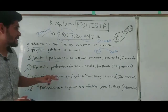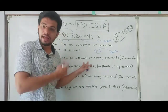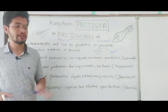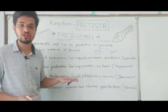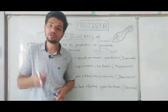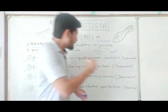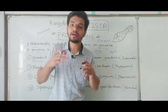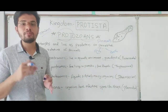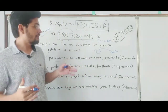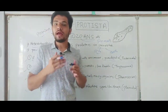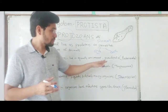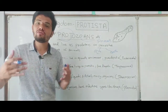Amoeboid protozoans are aquatic — they can live in marine or freshwater environments — or in moist soil. They possess pseudopodia. 'Pseudo' means false and 'podia' means feet, so they have false feet.